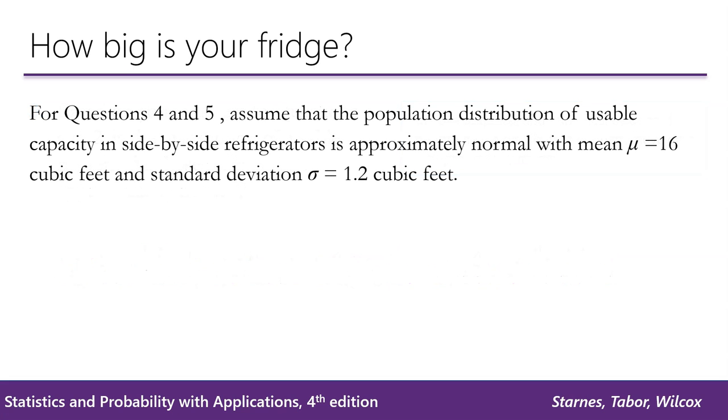For questions 4 and 5, we're going to assume that the population distribution of usable capacity in side-by-side refrigerators is approximately normal, with a mean of mu equals 16 cubic feet and a standard deviation of sigma equals 1.2 cubic feet.